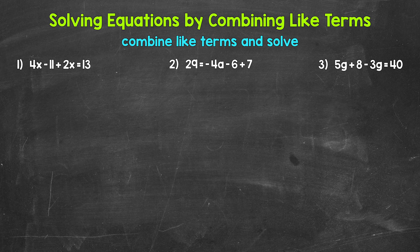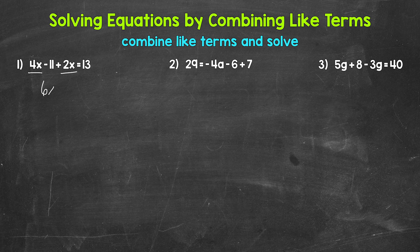So let's jump into number one, where we have four X minus 11 plus two X equals 13. Looking at this equation, do we have any like terms that we can combine? Yes — four X and two X are like terms, so we can combine them to simplify that side of the equation. Combining four X and two X, we get six X. So bringing down the rest: six X minus 11 equals 13. We've simplified the left side and now have a two-step equation to solve.